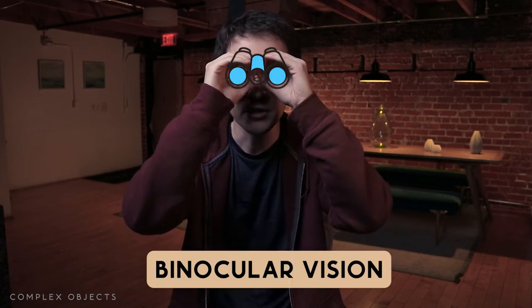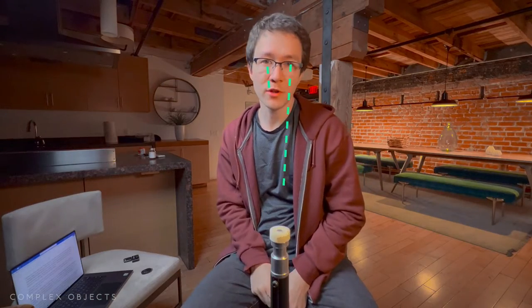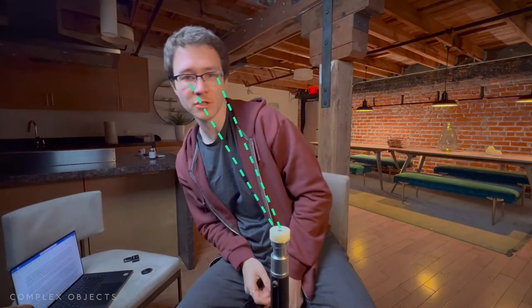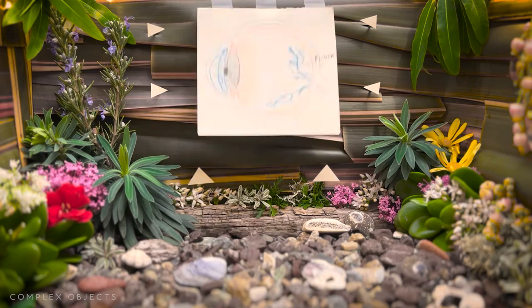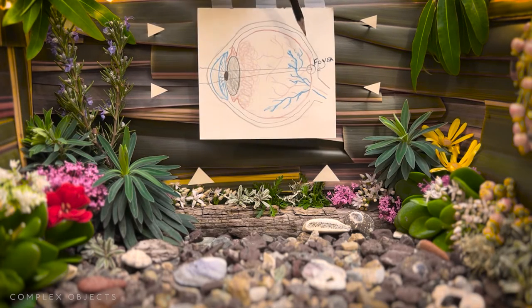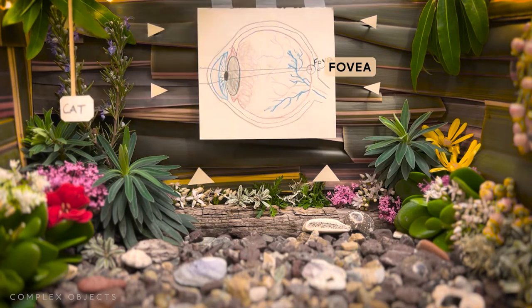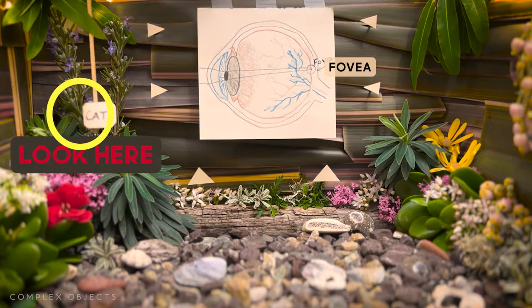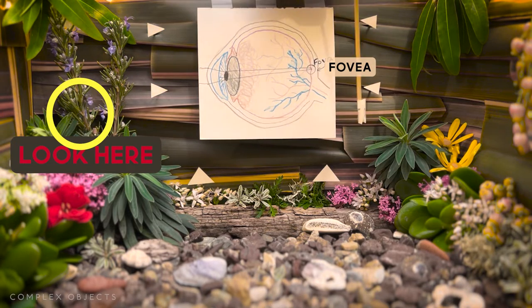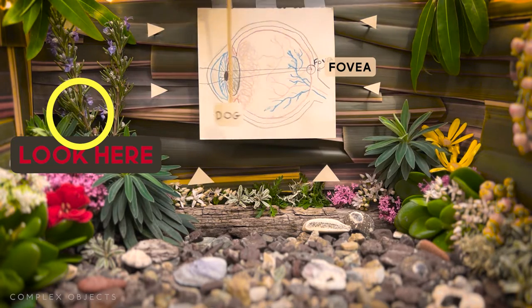Humans use binocular vision — this is when you have both eyes pointed forward and fixated on a target. Take a look around you right now; you're always looking at some particular thing. This is largely due to an area of highly concentrated cone cells called the fovea. The fovea corresponds to the center of our visual field, and it's where we see the most detail. If you keep looking at a target, you'll notice that you cannot read text that's even slightly off center.